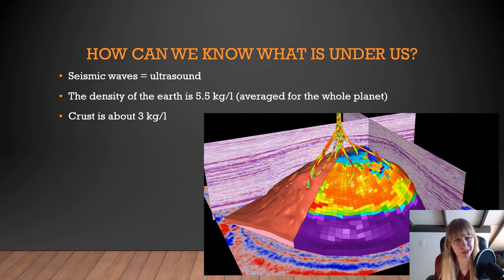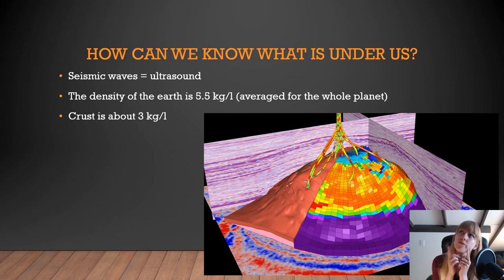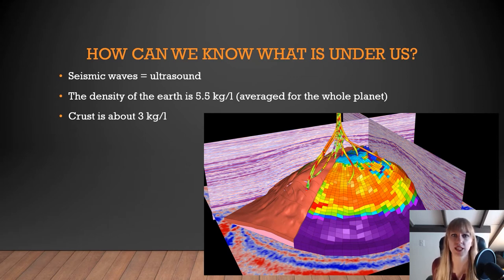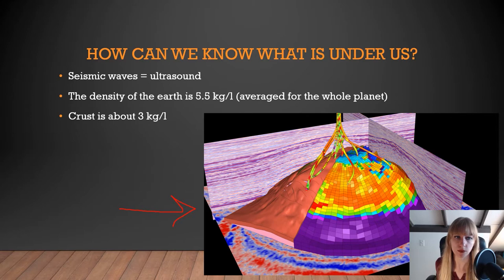But how exactly do we know that we have heavier material underneath us? We use seismic waves. Seismic waves end up becoming like the ultrasound for the Earth — waves react differently as they interact with materials of different densities or liquids in the ground, forming an image. The density of the Earth itself is about 5.5 kilograms per liter, averaged for the whole planet.